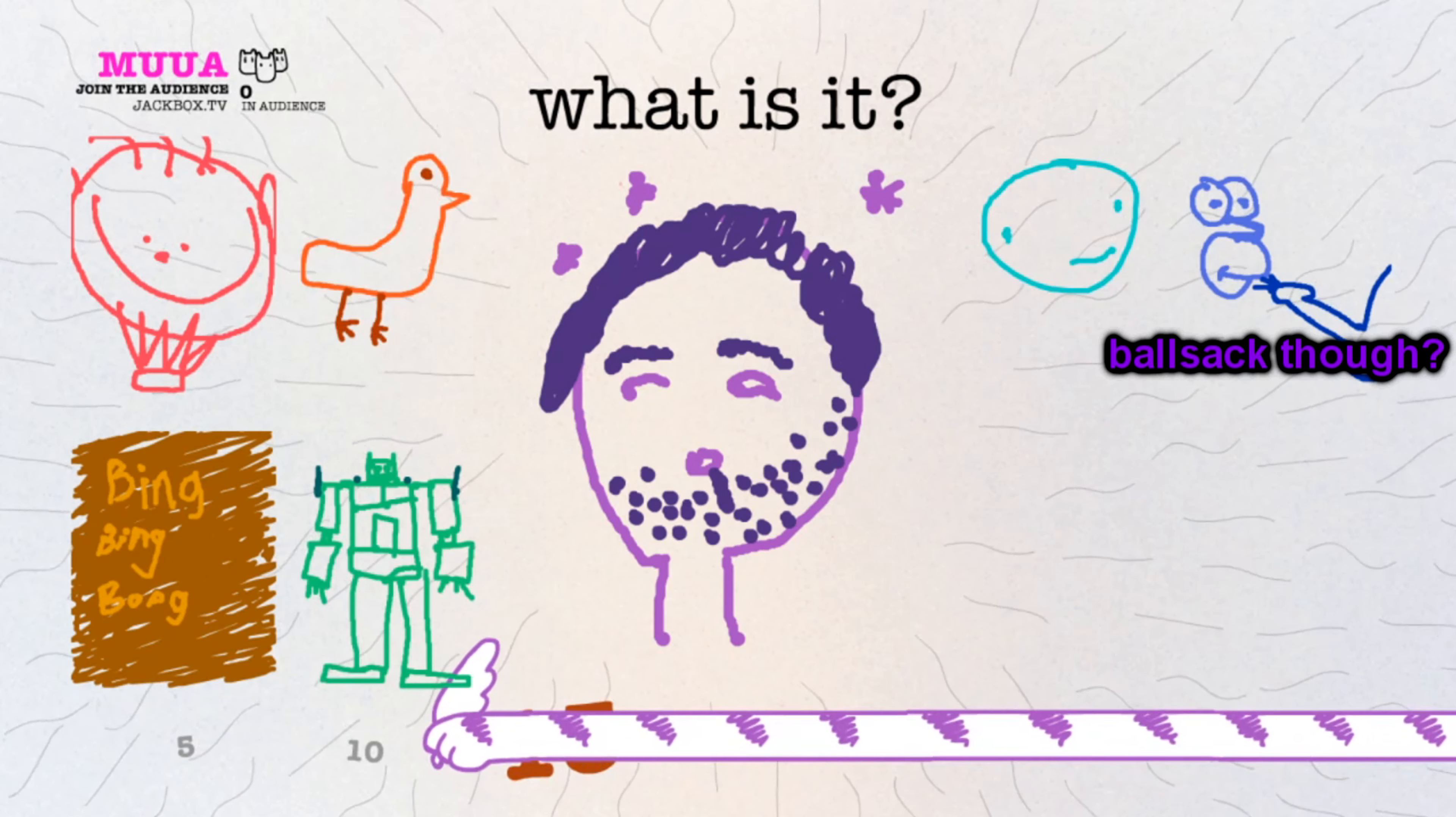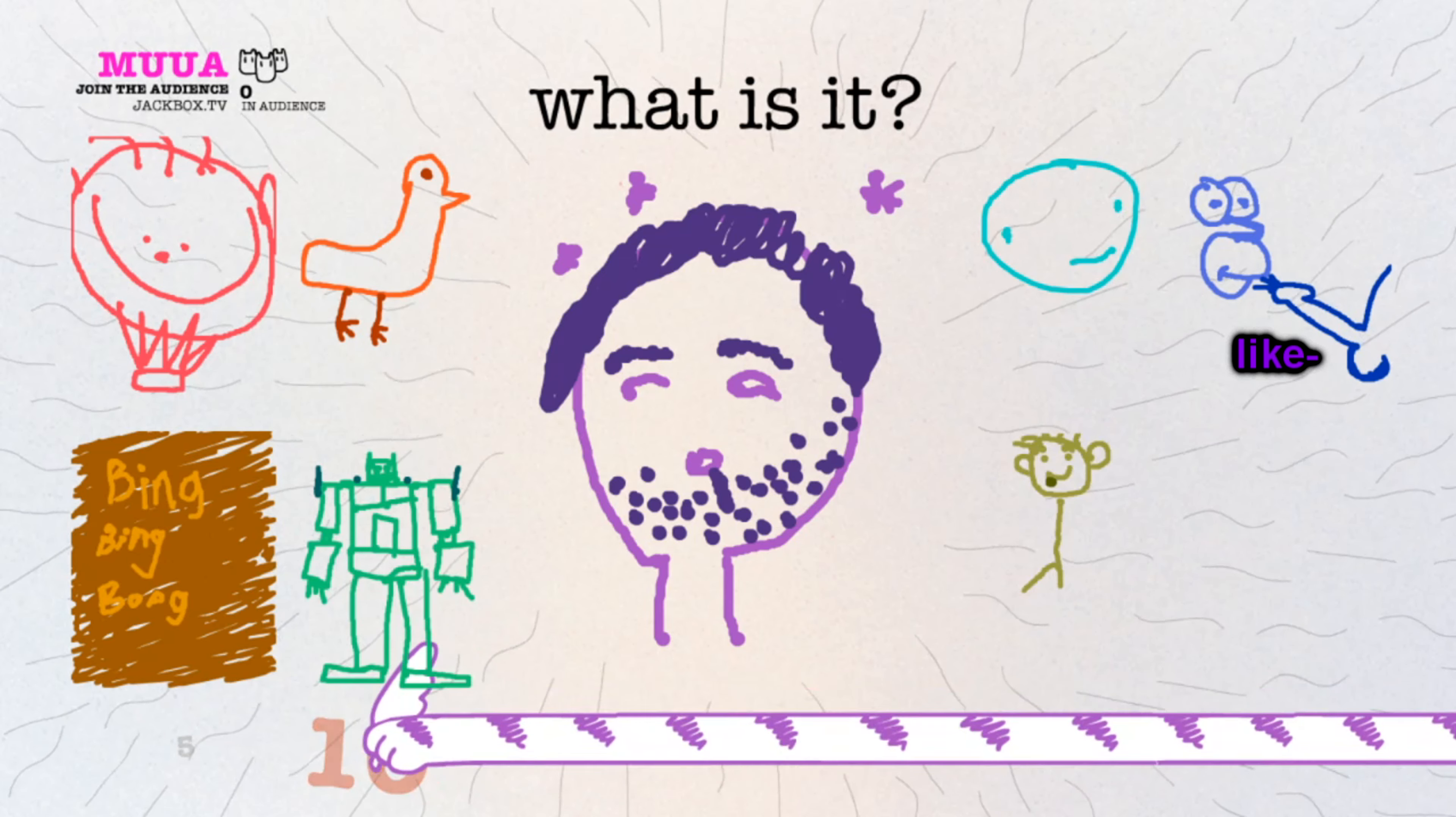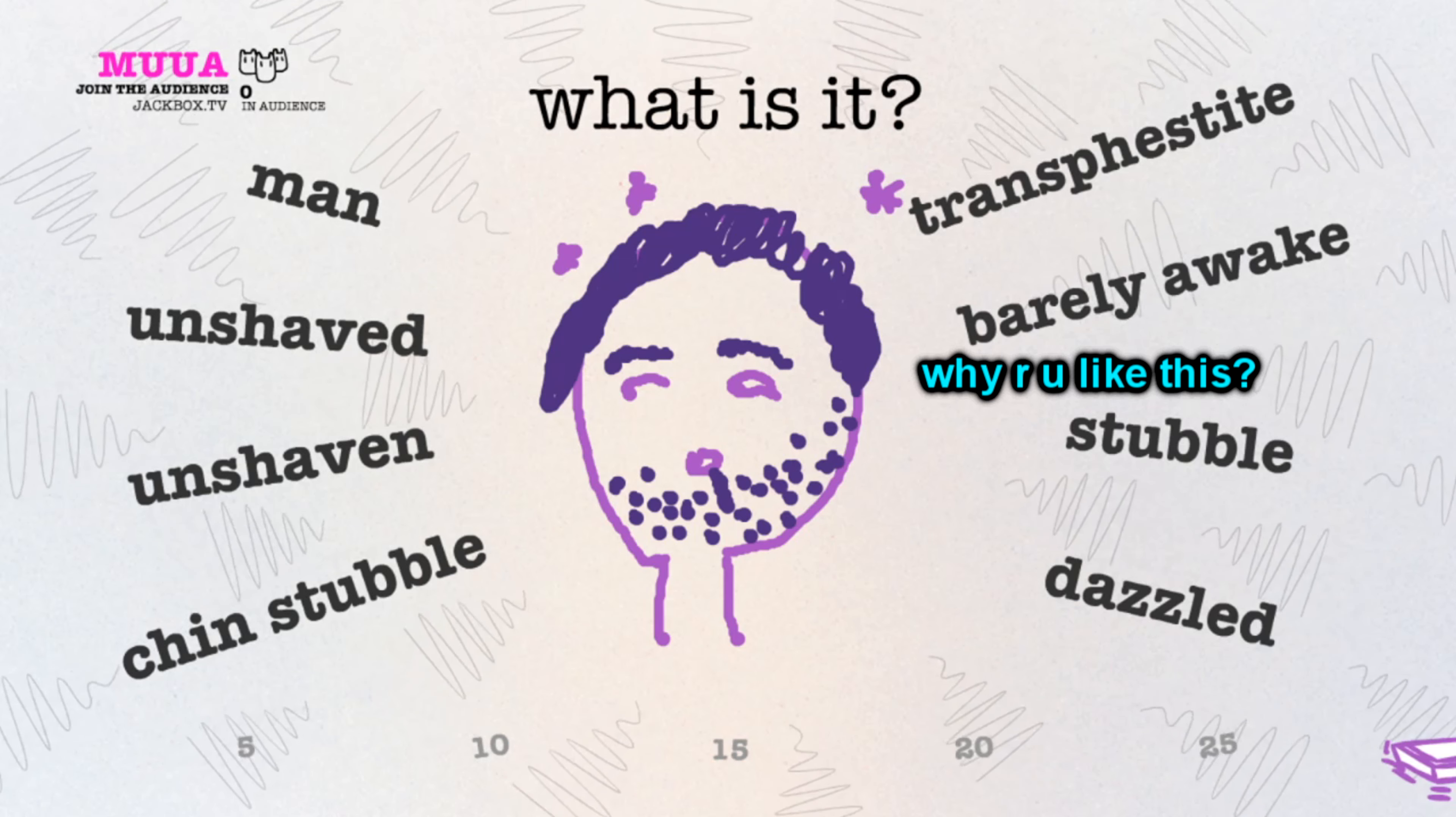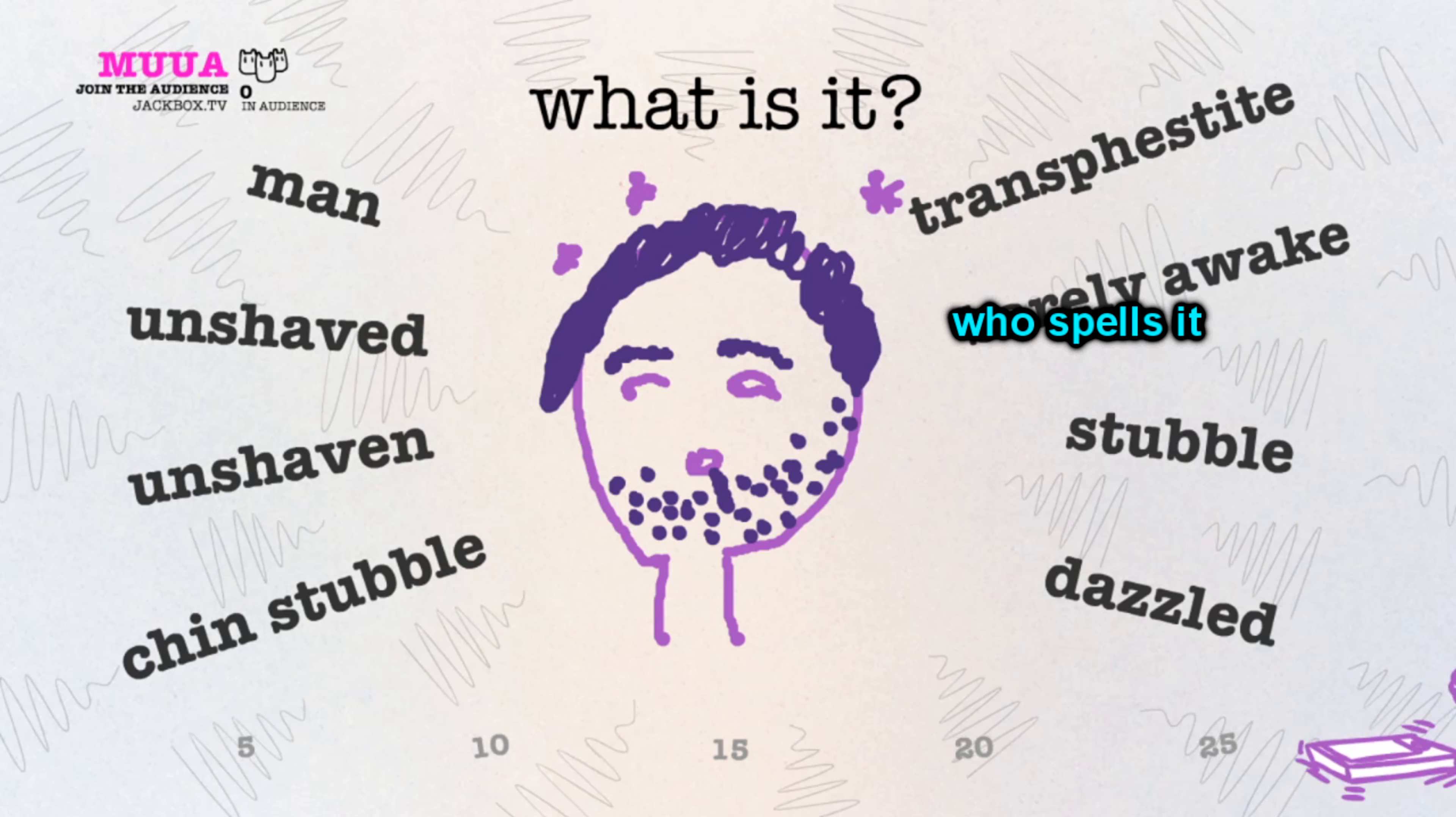How firm is that ballsack though? Like, how firm is it? You drew a semicircle. How gay do you have to be, Teemo? Yeah, why? You're like, transfixed? Who spells it like that?